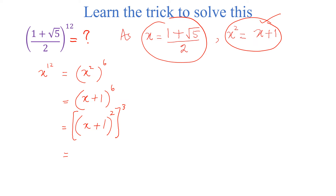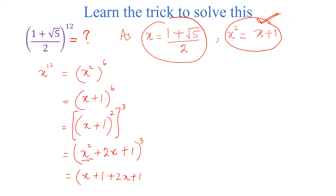From here we can write (x² plus 2x plus 1)³. Now x² is equal to x plus 1, so we substitute to get (x plus 1 plus 2x plus 1)³. Simplifying, this becomes (3x plus 2)³.